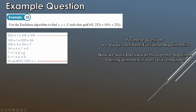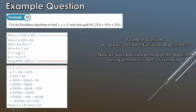We start on the line: 7 equals 1 times 6 plus 1. So we say that 1 is equal to 7 minus 1 times 6. Because remember, the GCD equals 1, so this expression has to equal 1. That's our first line, and now we keep working backwards.